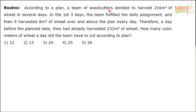According to a plan, a team of woodcutters decided to harvest 216 cubic meters of wheat in several days. In the first three days the team fulfilled the daily assignment, and then it harvested 8 cubic meters of wheat over and above the plan every day. Therefore, a day before the planned date they had already harvested 232 cubic meters of wheat. How many cubic meters of wheat a day did the team have to cut according to the plan?